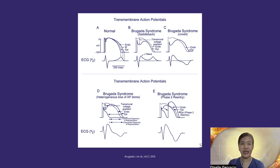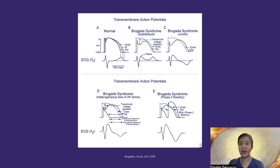The loss of function in SCN5A is more pronounced in the epicardium. Because of this premature termination of depolarization, there is a so-called loss of the spike and dome, which is the repolarization phase, more prominent in the epicardium but not in the endocardium of the right ventricular outflow tract. This difference in membrane potential between the epicardium — with loss of spike and dome — and the normal endocardium causes what we call a dispersion of repolarization and phase two re-entry, leading to ventricular fibrillation.